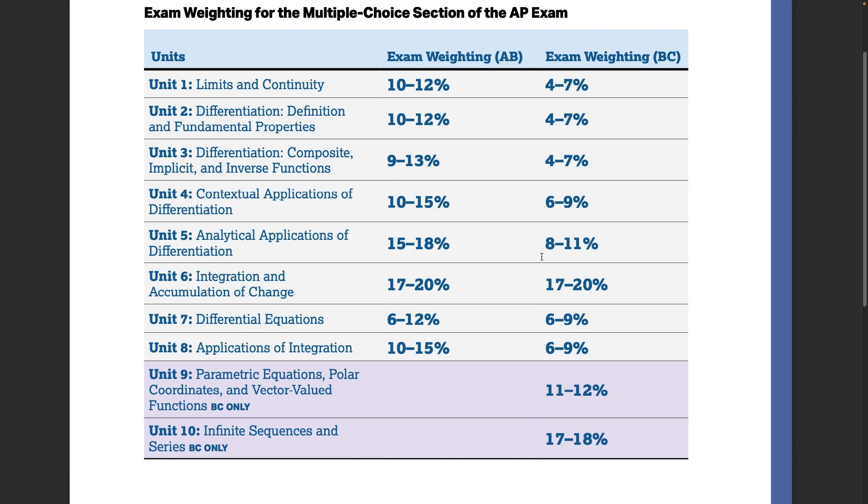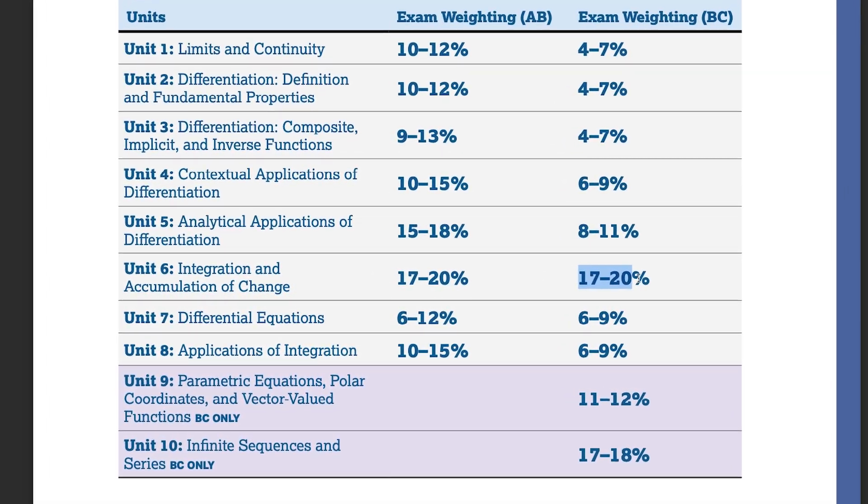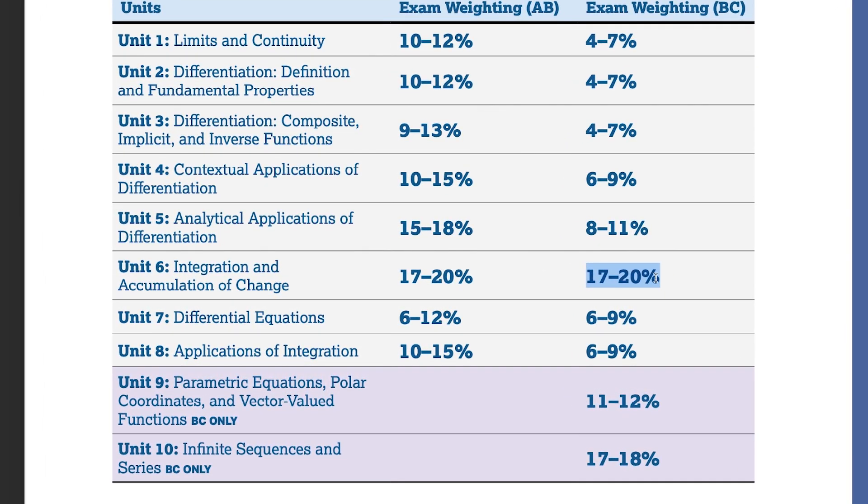And once again, if we go back to this list, the big ideas could be found by looking at the exam weight for either the AB or the BC exam. So knowing that an integral can be used to show accumulation of change is likely to show up every fifth question in the multiple choice. If it's 20% of the exam, every five questions is going to ask you something based on this.